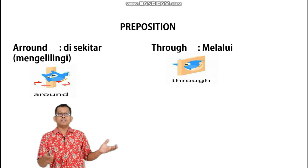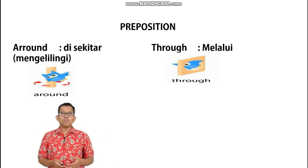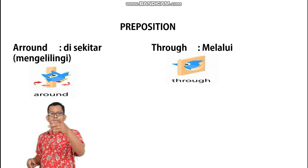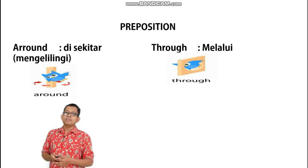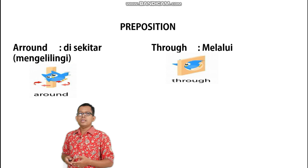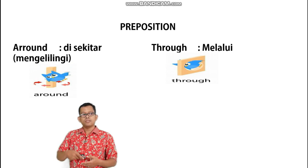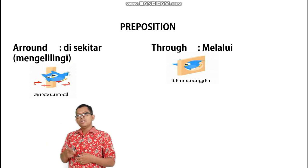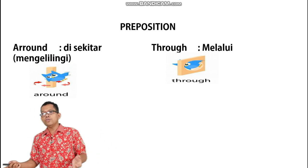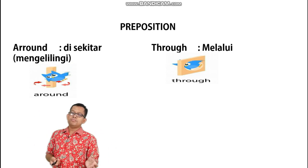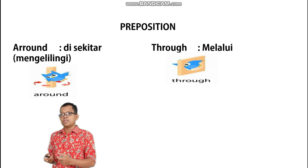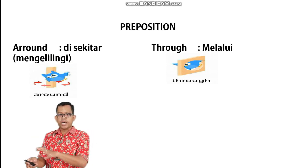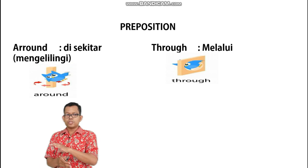Lalu, 'around'. Around itu artinya di sekitar, mengelilingi. Seperti gambar itu — the blue bird is around the box, jadi dia memutar keliling. Lalu, 'through' — artinya melalui. Berarti benda sebagai subjek itu dia menerobos benda sebagai objek.